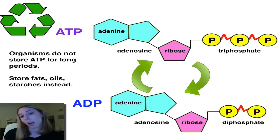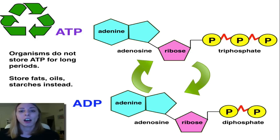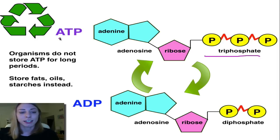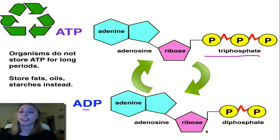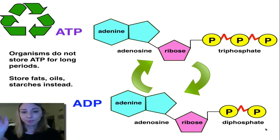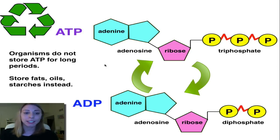So we're actually going to talk about two forms of the energy currency molecule: ATP, which gets its name from triphosphate — adenosine triphosphate — and ADP, which gets its name from adenosine but only has two phosphates, hence the 'di' prefix. So how do we get energy from ATP and how do we also recycle it?